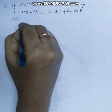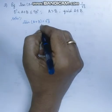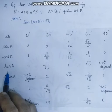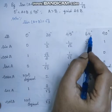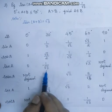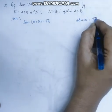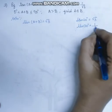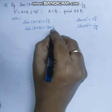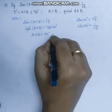tan(a+b) is equal to root 3. Root 3 value is tan 60 degree, and 1 by root 3 value is tan 30 degree. So tan(a+b) is equal to root 3, which equals tan 60 degree. Cancelling tan on both sides, we get a plus b is equal to 60 degree. Consider this as equation 1.